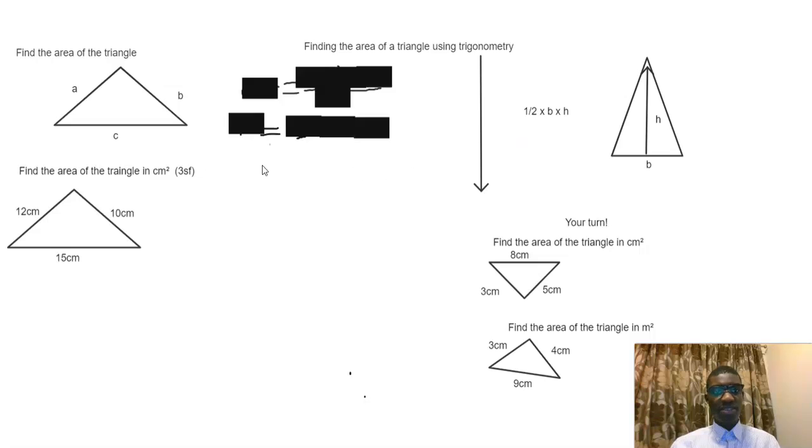So what could we do to find the area of this triangle without using this equation? Can you think of an equation that we could use? So hopefully you would say A = ½ab sin C.